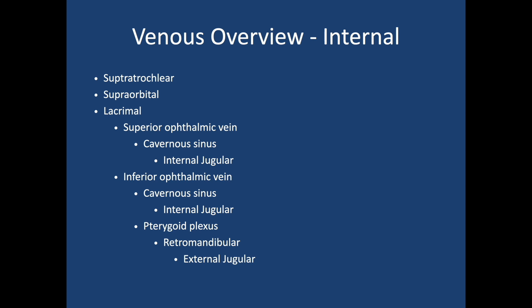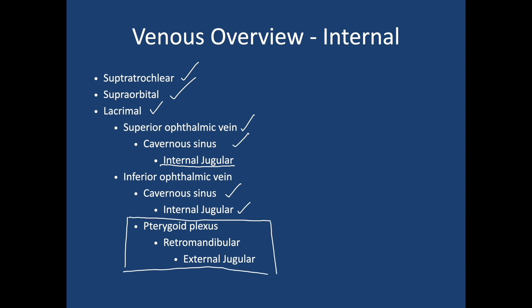Of course, arterial supply must be matched by venous drainage. Unsurprisingly, this drains back internally and externally. Following a gravitational path, the veins go back down the supratrochlear and supraorbital; laterally they go down the lacrimal, flowing through to the superior ophthalmic vein into the cavernous sinus and then the internal jugular. The inferior ophthalmic vein collects from upper and lower lids, passing to the cavernous sinus and internal jugular, but also to the pterygoid plexus, which goes to the retromandibular and then the external jugular. Just as there is an anastomosis for arterial supply, there is an enormous overlap for venous drainage.